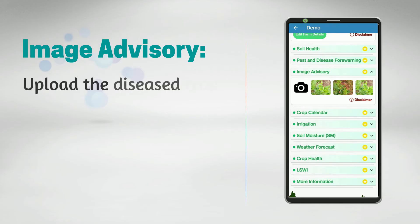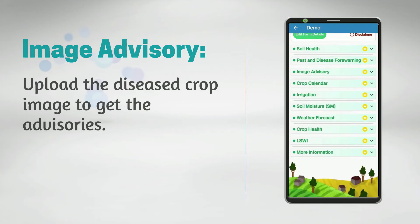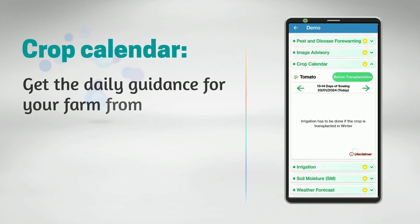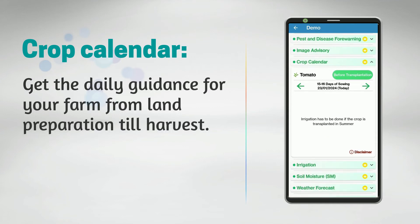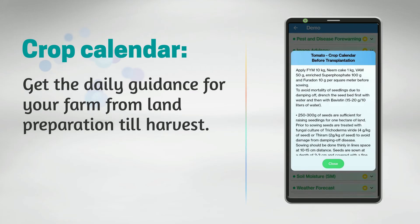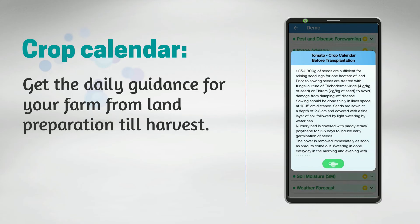Image Advisory: Upload the diseased crop image to get advisories. Crop Calendar: Based on the sowing date, the crop calendar will guide you through farm activities starting from field preparation to harvest and threshing, including timely information about irrigation and spraying of insecticides or pesticides.